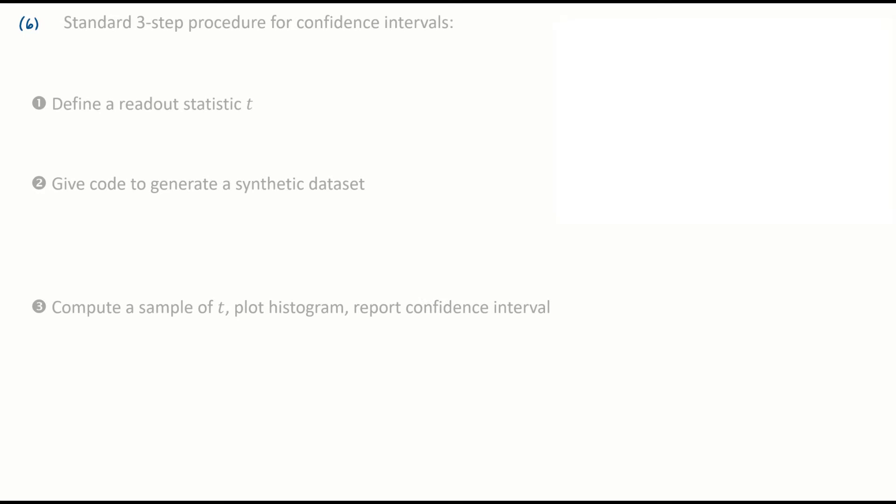Part B. What is meant by 95% confidence interval for theta hat? Here you should remember the standard procedure that we set out for confidence intervals. It was always the same procedure, a three-step process. First, define a readout statistic. Next, give code to generate a synthetic dataset. Next, compute a sample of the readout statistic. Plot a histogram of values and find a confidence interval.